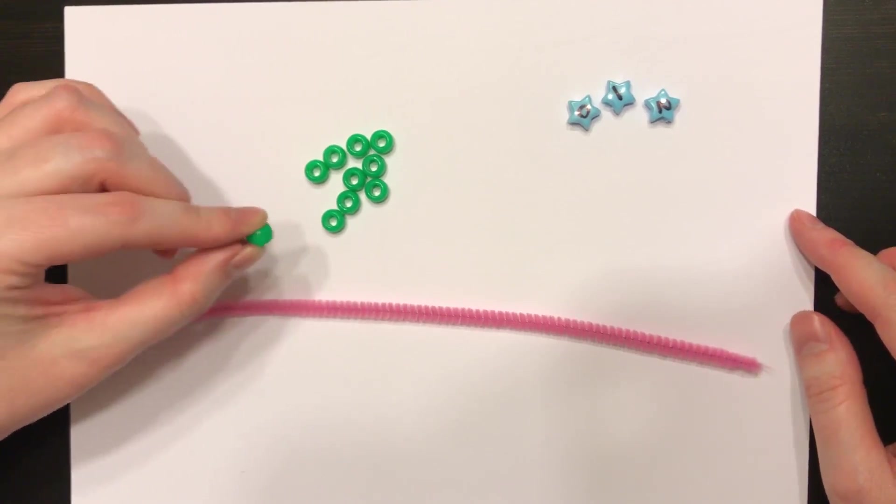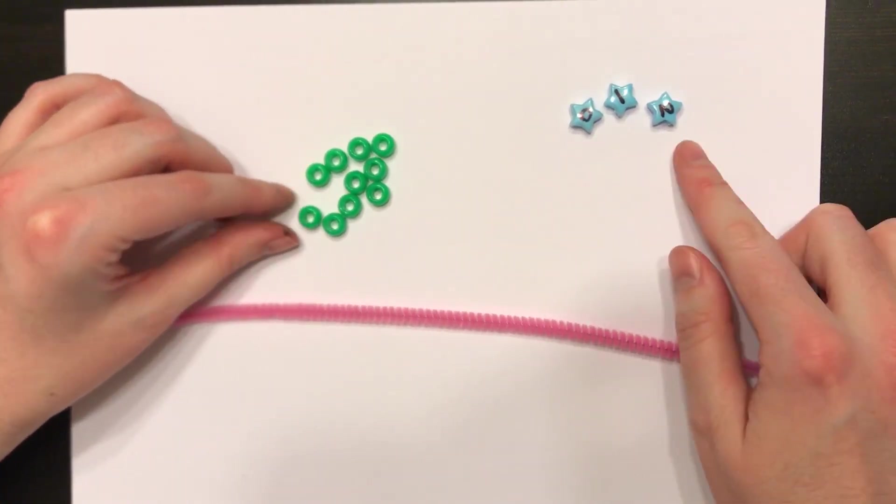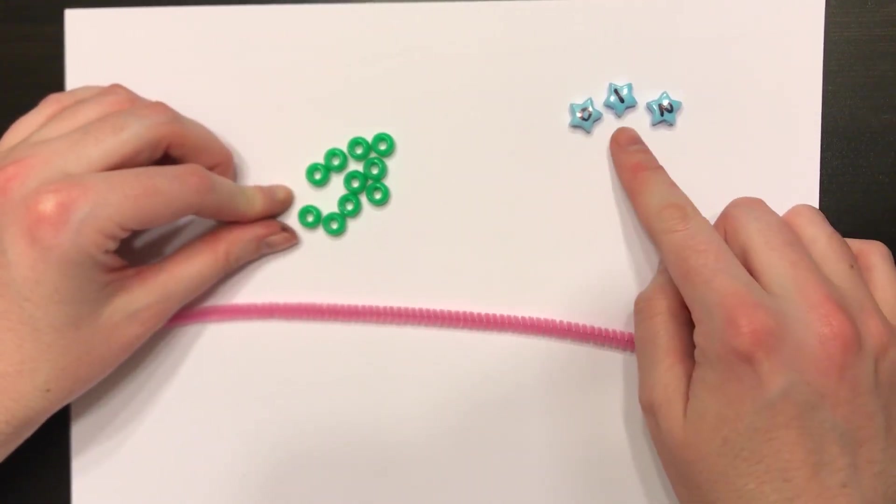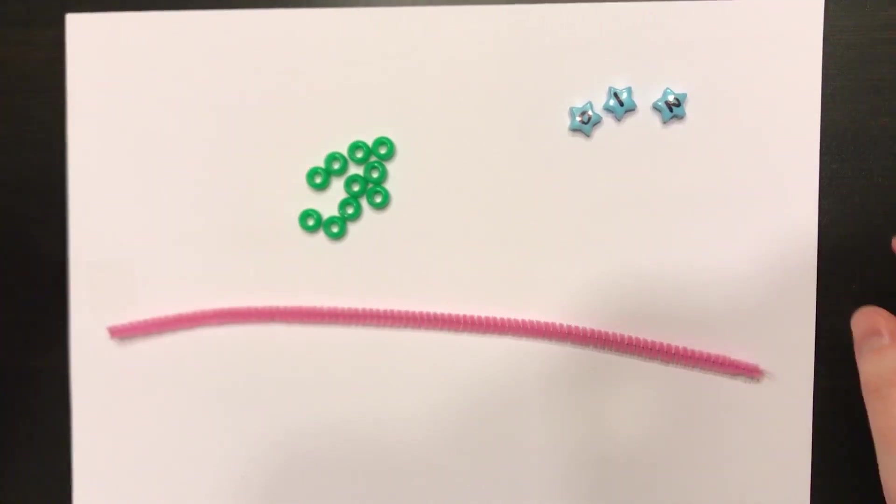The regular beads are going to be our fractions, and the star beads are going to be our whole numbers. I have 0, 1, and 2 here, because we're going to go above 1 in a little bit.